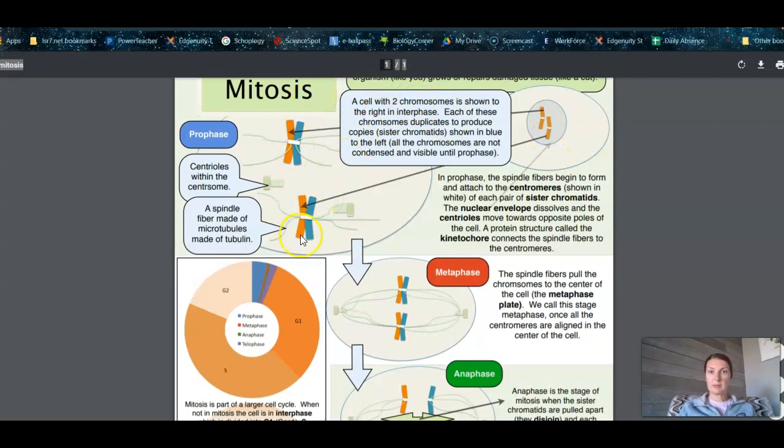Now, mitosis is part of the cell cycle, and that's what this image is here. With the cell cycle, we have the first phase which is G1, then S, then G2.